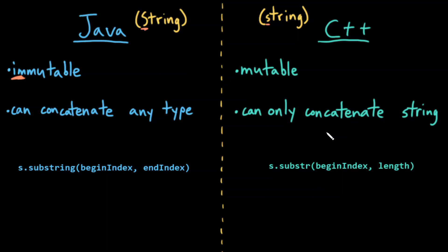The third big distinction between the two is the substring method. In Java, we have a substring method, whereas in C++ we have SUBSTR that takes as input a beginning index and a length.